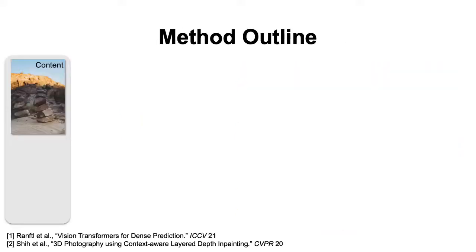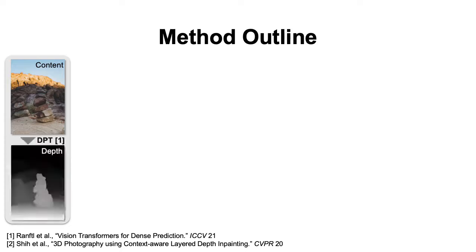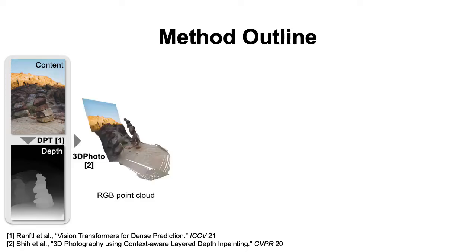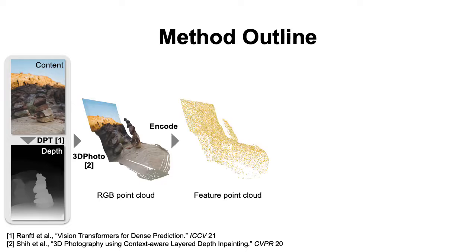So how does our method work? Starting from a single snapshot of the scene, we first predict a depth map using any monocular depth estimation method such as DPT. We then convert the content-depth pair into a 3D photo and back-project the pixels into an RGB point cloud using estimated camera intrinsics. A graph convolutional network reasons about the 3D scene structure given by the RGB point cloud and outputs a featurized point cloud.